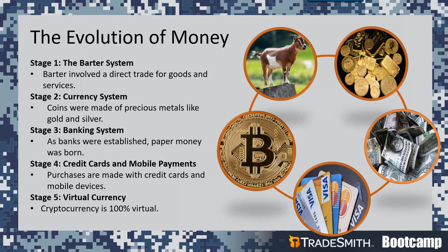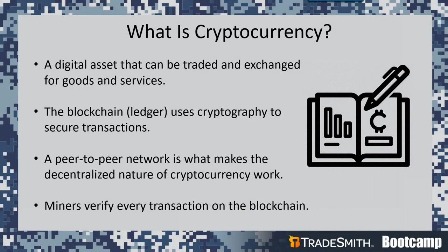Cryptocurrencies are digital assets that can be traded and exchanged for goods and services on a decentralized peer-to-peer network. This means that people can send money directly to one another without a bank or third party as an intermediary. Bitcoin was created so people don't have to rely on government or financial institutions to make financial transactions. Cryptocurrencies exist in virtual wallets and individual coin ownership is stored on blockchains — digital ledgers that manage and record all transactions. Let me give you an analogy.